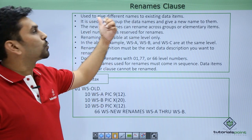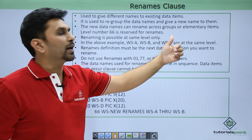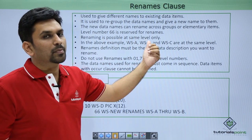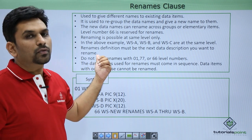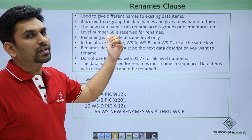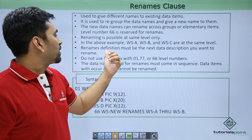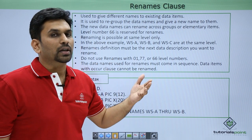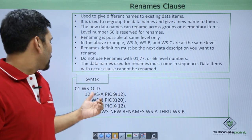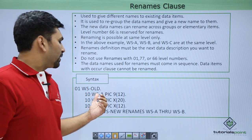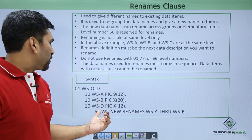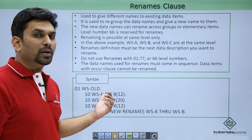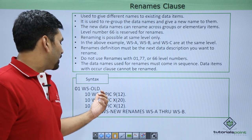Next is the rename clause. It is used to give a different name to existing data items — either a group item or an elementary item. The only condition is the level must be the same; if items are at the same level, only then can we rename them. Level number 66 is reserved for renames. The renames definition must be the next data description after the variable you are renaming. In the syntax example, WS-OLD has members A, B, and D at level 10. We create WS-NEW at level 66 which renames WS-A through WS-B, grouping A and B, so the values of WS-A and WS-B will be stored in WS-NEW.